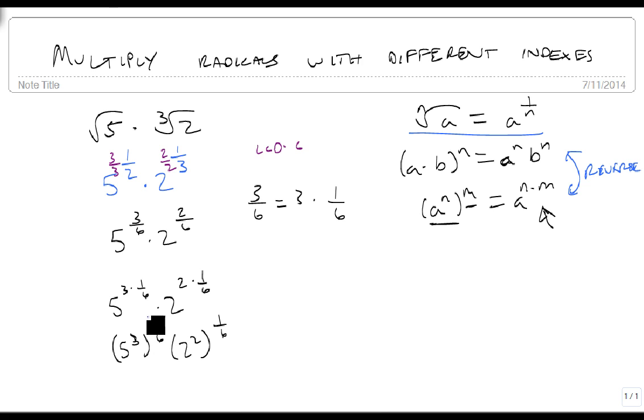Now this is why they had to be the same. Notice that these are both 1 sixths. This is that same n right here, so we're going to factor it out. So we get a single 5 cubed times 2 squared raised to the 1 sixth power.